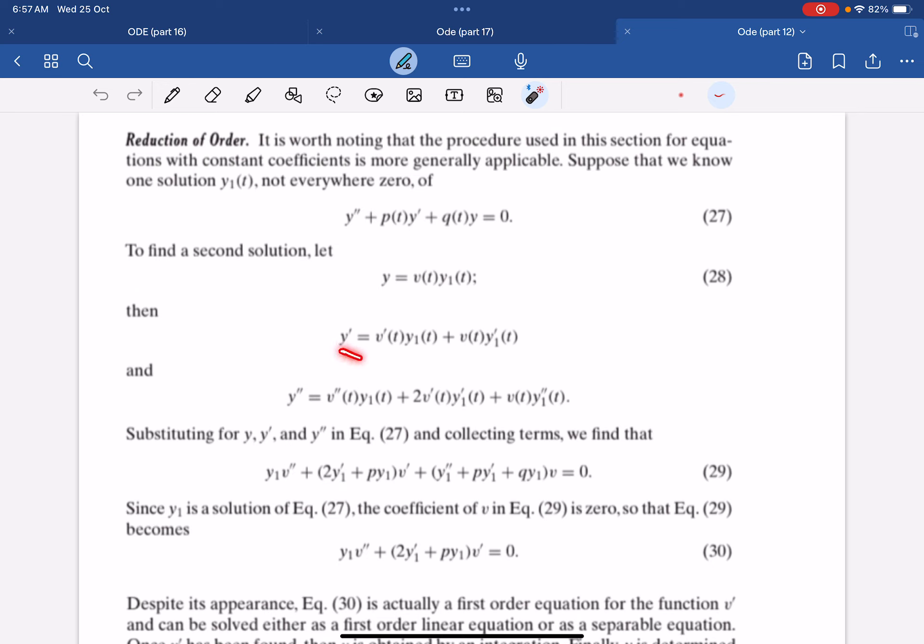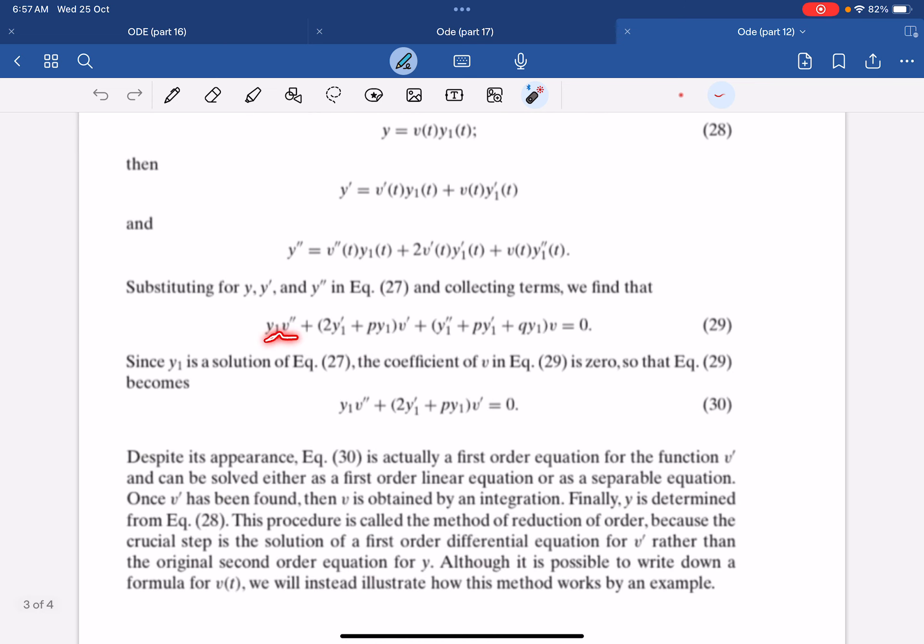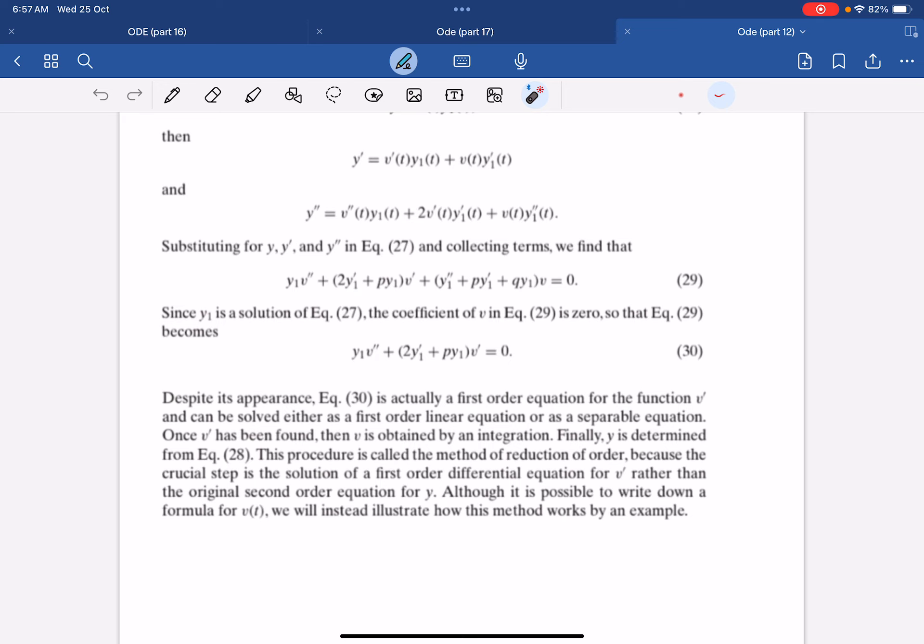Then when we differentiate once we get this, and differentiate twice we get this. We substitute them into equation 27 and we collect the terms. This allows us to form this equation. But we already know y1 is a solution, so actually this and this cancels out because they will equal to zero.